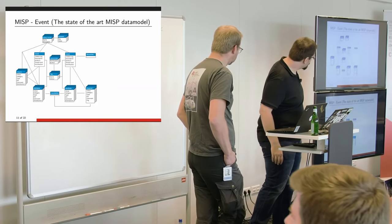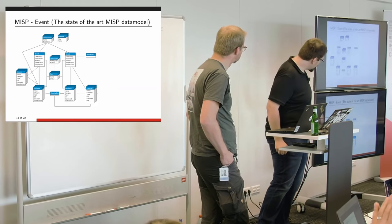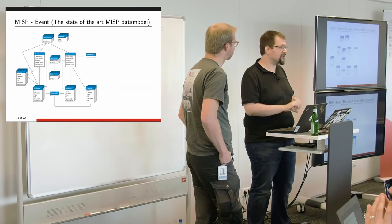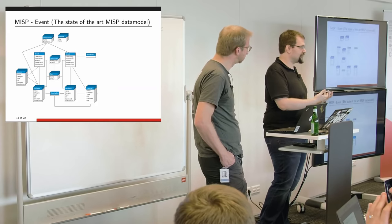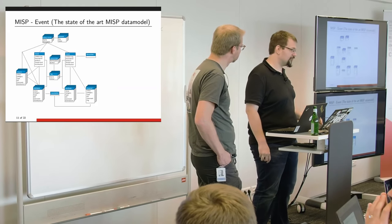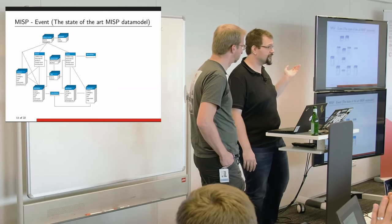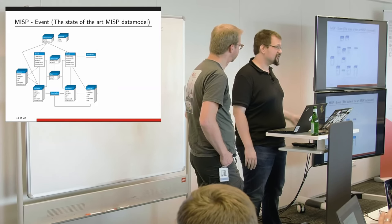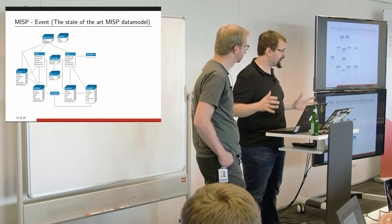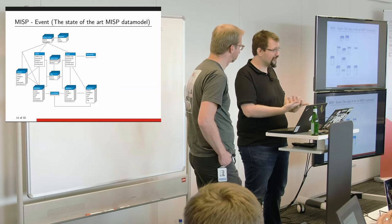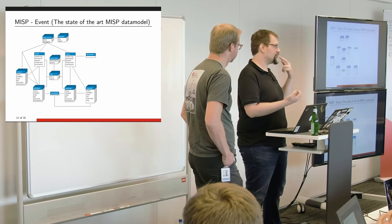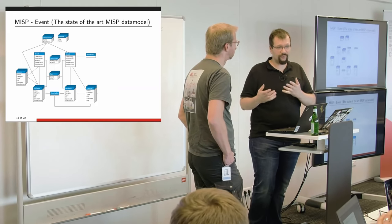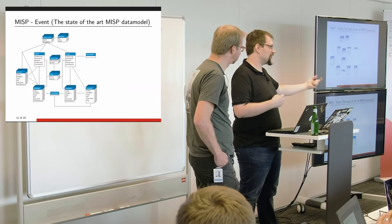A more recent addition to the data model is Galaxies, which allow you to contextualize data like tags and taxonomies but also provide rich metadata along with it. Before galaxies, if you wanted to describe something related to APT29, you'd just put the APT29 label on it — but if your partner has no idea what APT29 is, that's not helpful. With Galaxies, we have a massive standard library: a threat actor library with synonyms, suspected country of origin, references to articles and reports, etc. Instead of just assigning a label, you assign the full rich object. You can create your own galaxies as JSON blobs.